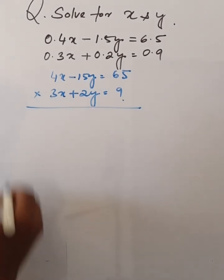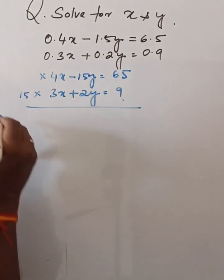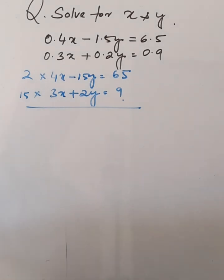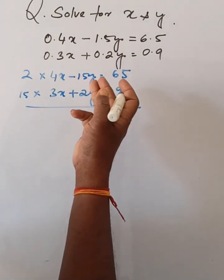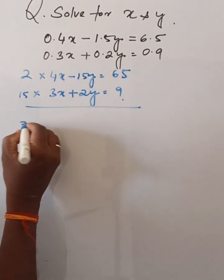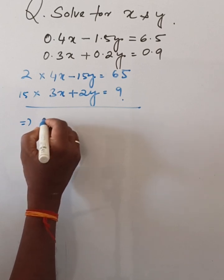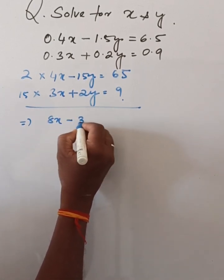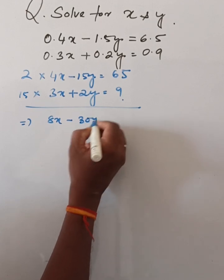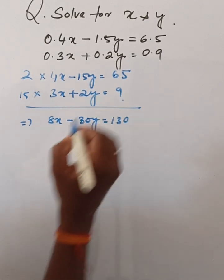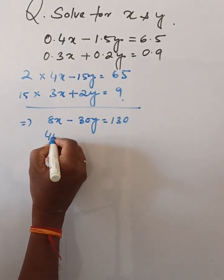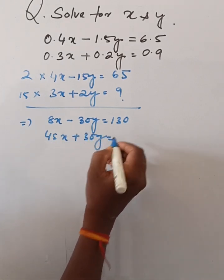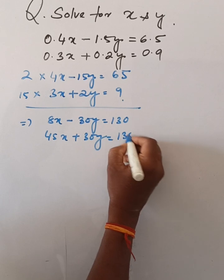Balancing this, 15 is there and 2 is here, eliminating the y part. We get 8x minus 30y is equal to 130. Then, 45x plus 30y is equal to 135.